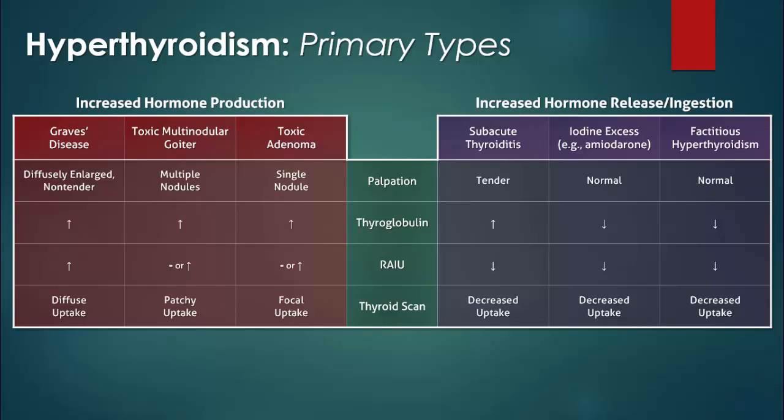In primary hyperthyroidism, TSH is suppressed and usually both T3 and T4 are elevated. Since these hormone levels are not a differentiating factor within this group, they are not included in this table.